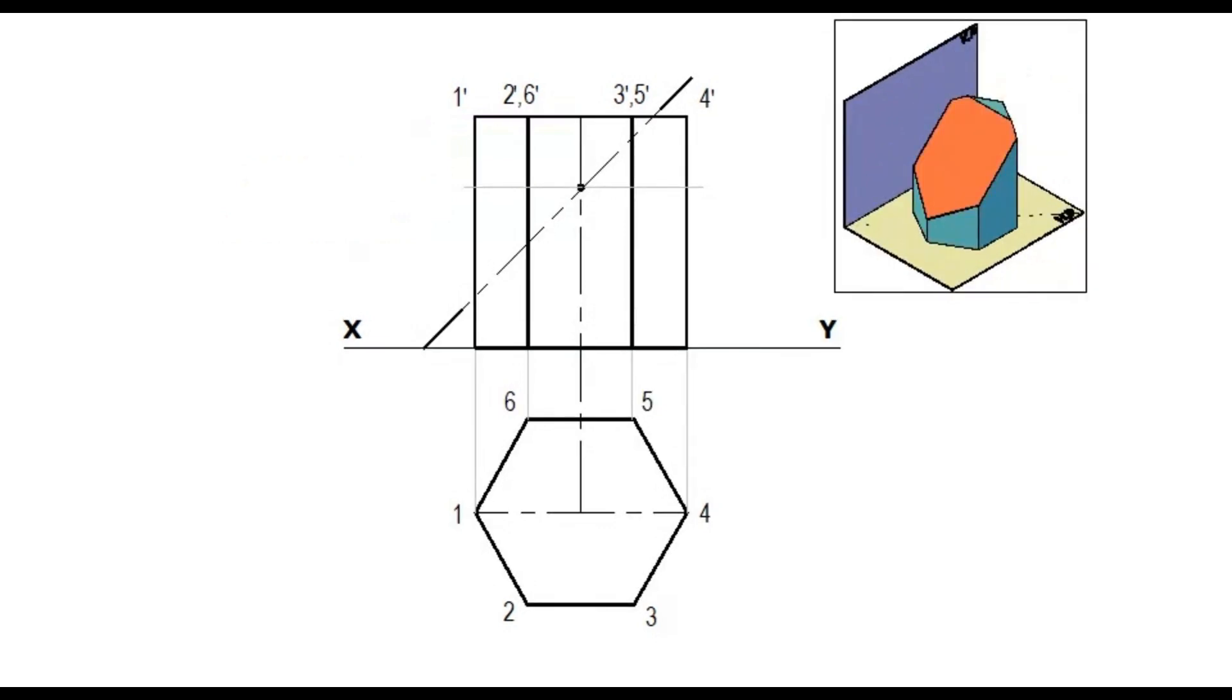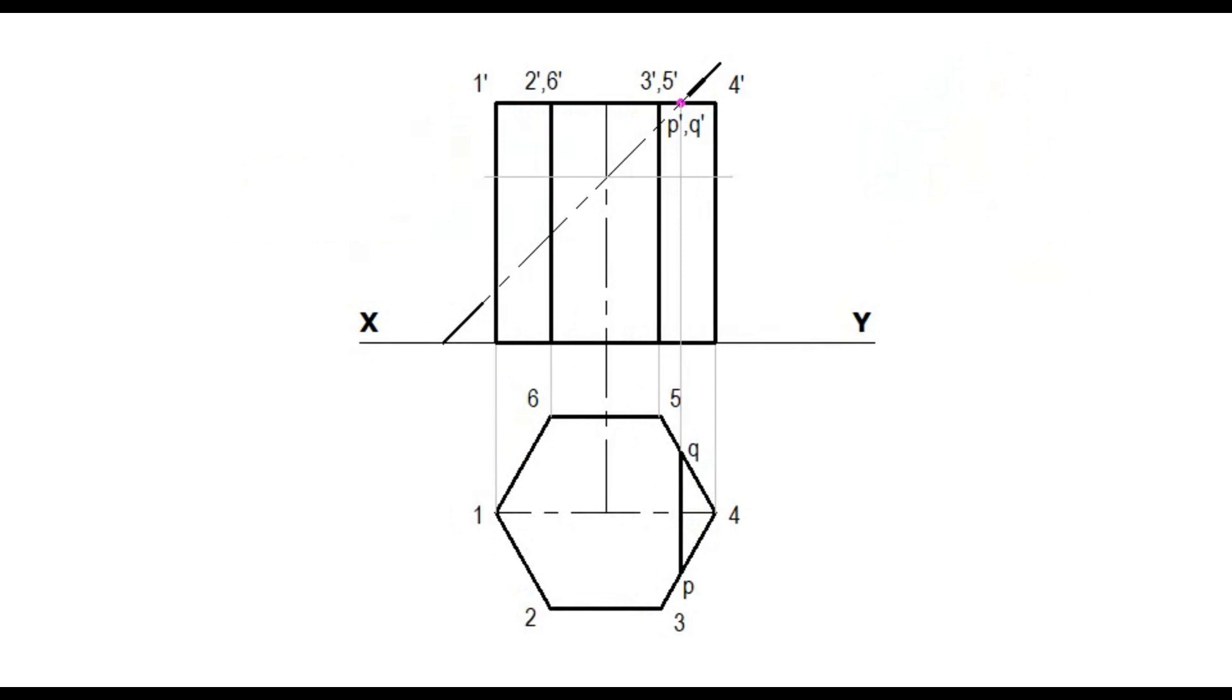Project the point towards the plan. Those points can be named as P and Q in the plan and P dash and Q dash in the elevation.